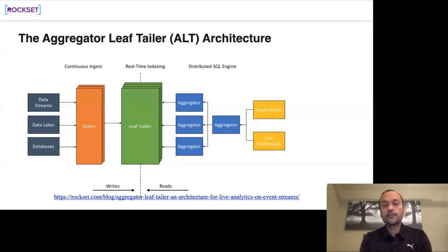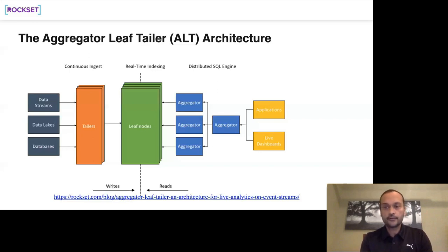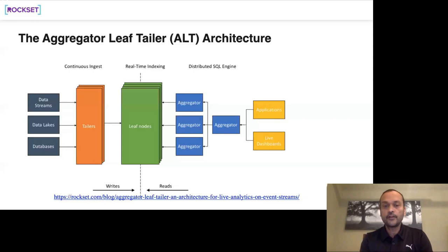The tailors translate data into our internal format. If there is high write volume, we add more tailors. If more data needs to be stored, we add more leaf nodes. If there are more queries, we add more aggregators. It's a completely disaggregated architecture, which is why we can run this efficiently on the cloud — each of the three tiers can scale up and down independently based on usage.